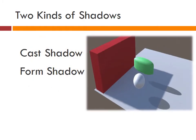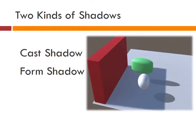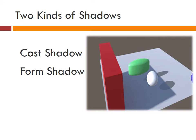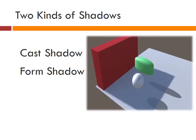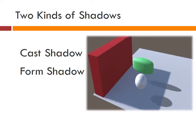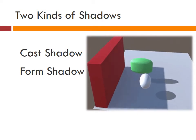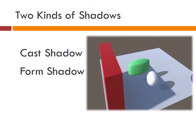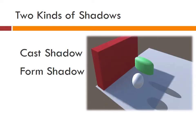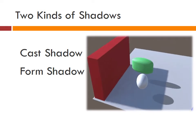Shadow is of two types — cast shadow and form shadow. When an object blocks a light source, it casts a shadow. A cast shadow is not a solid shape but varies in tone and value. A form shadow is the less defined dark side on an object not facing the light source, and it has softer, less defined edges than a cast shadow.